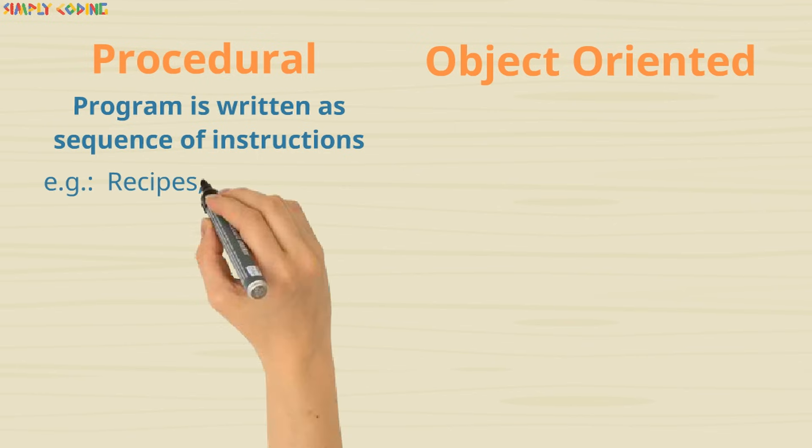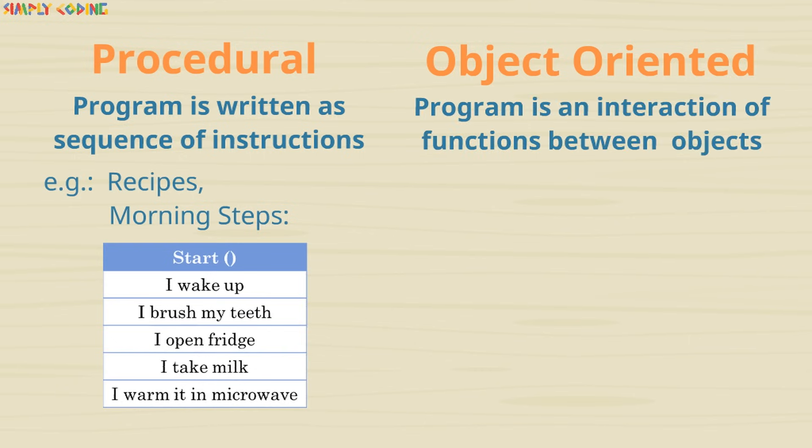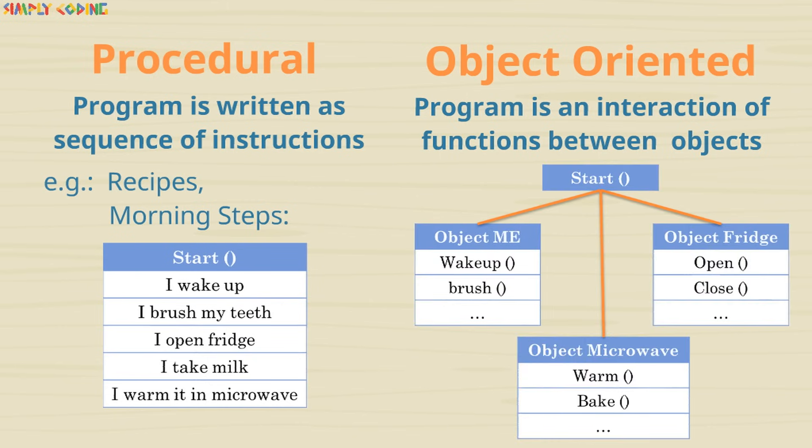In object oriented languages, program is written as interaction of functions between participating objects. For example, in the steps for morning schedule, you have three objects, eye, fridge, and microwave.